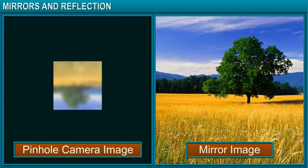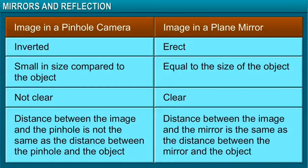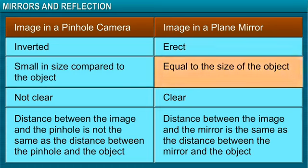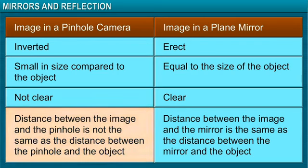Whereas in a mirror, the image is erect. There are other differences: the image in a pinhole camera is smaller in size than the object, whereas the image in a plane mirror is the same size as the object. The distance between the image and the pinhole is not the same as the distance between the pinhole and the object, whereas the distance between the image and the plane mirror is the same as the distance between the mirror and the object.